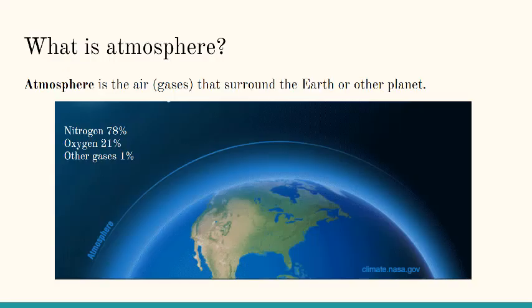The atmosphere is the air or gases that surround the earth or other planet. Our atmosphere is 78% nitrogen, 21% oxygen, and about 1% other gases.